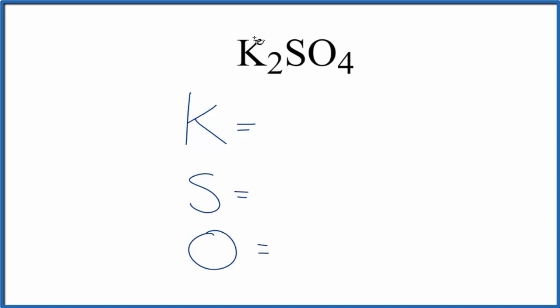So the subscript, the number after the element, that tells us how many atoms there are. Potassium, we have two. Sulfur, it's not written. That means that it's going to be one. So we have one of those and four oxygen atoms.